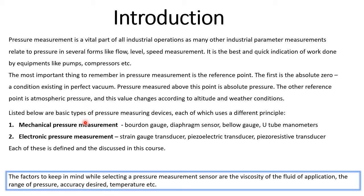We will now move on to the types of pressure measuring devices. We have broadly classified these into two categories: mechanical pressure measurement and electronic pressure measurement. Mechanical types include Bourdon tube gauges, diaphragm gauges, and manometers. Electronic pressure measurement includes transducer systems like strain gauge, piezoelectric, and piezoresistive transducers, which convert pressure into an electrical signal.